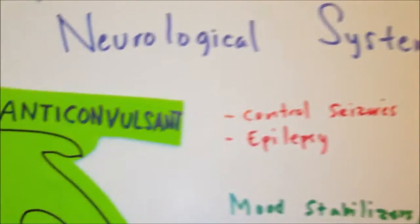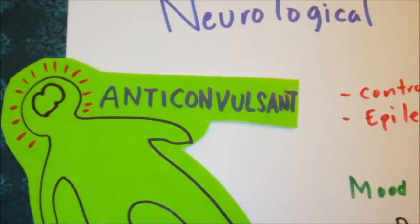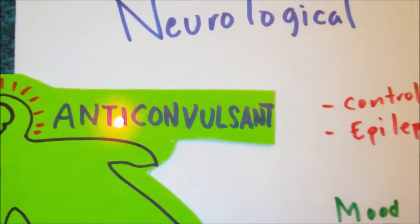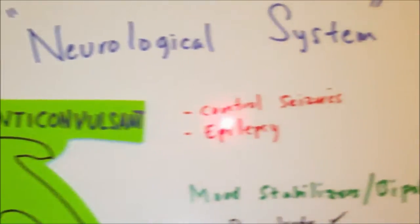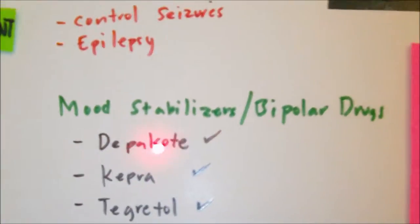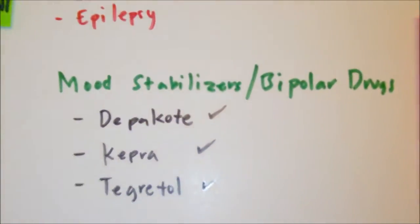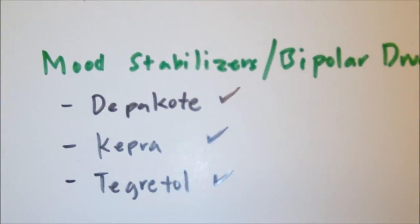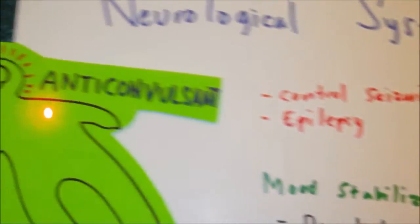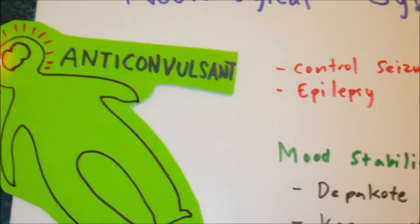Let's first talk about anticonvulsants. Anticonvulsant drugs are used to control seizures or in people who have epilepsy. We also know that some anticonvulsants can also be prescribed to those with bipolar disorder, which is a manic depression, as mood stabilizers. These medications help to alleviate basically the highs and the lows of the mood associated with these disorders.